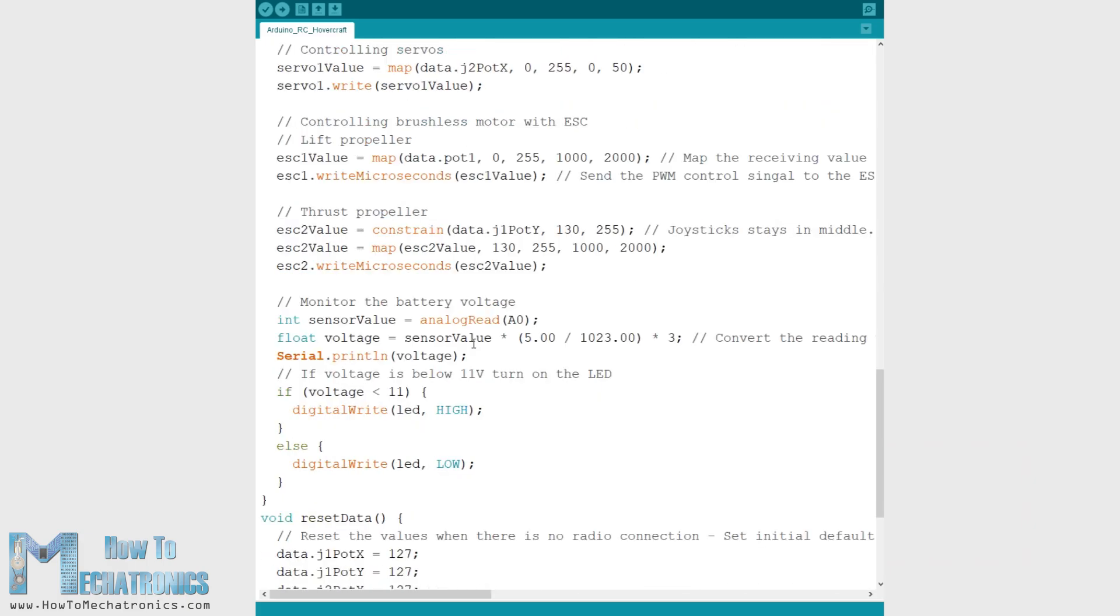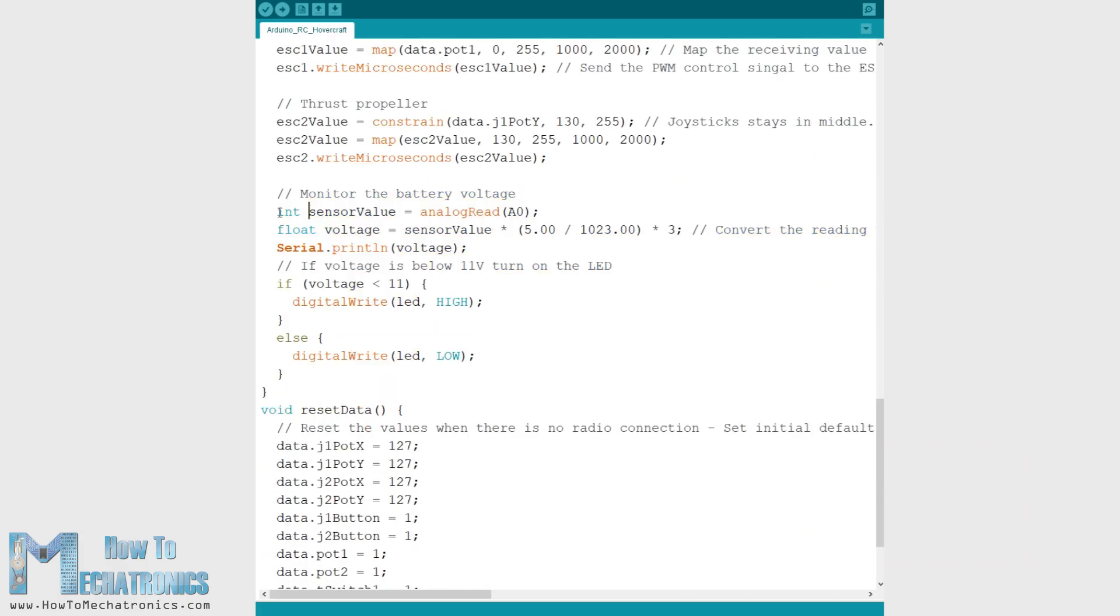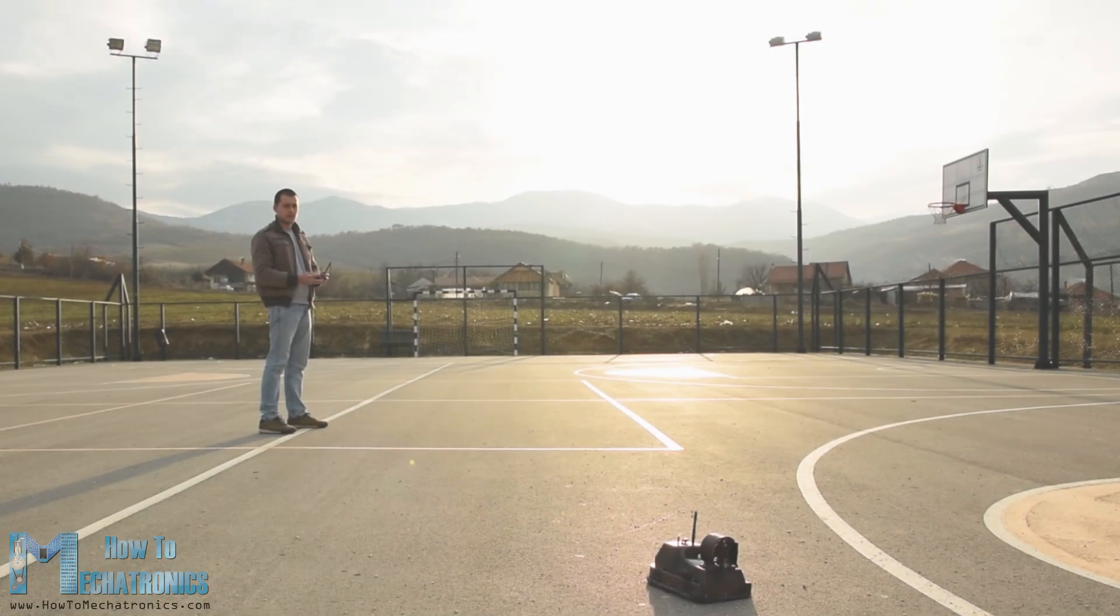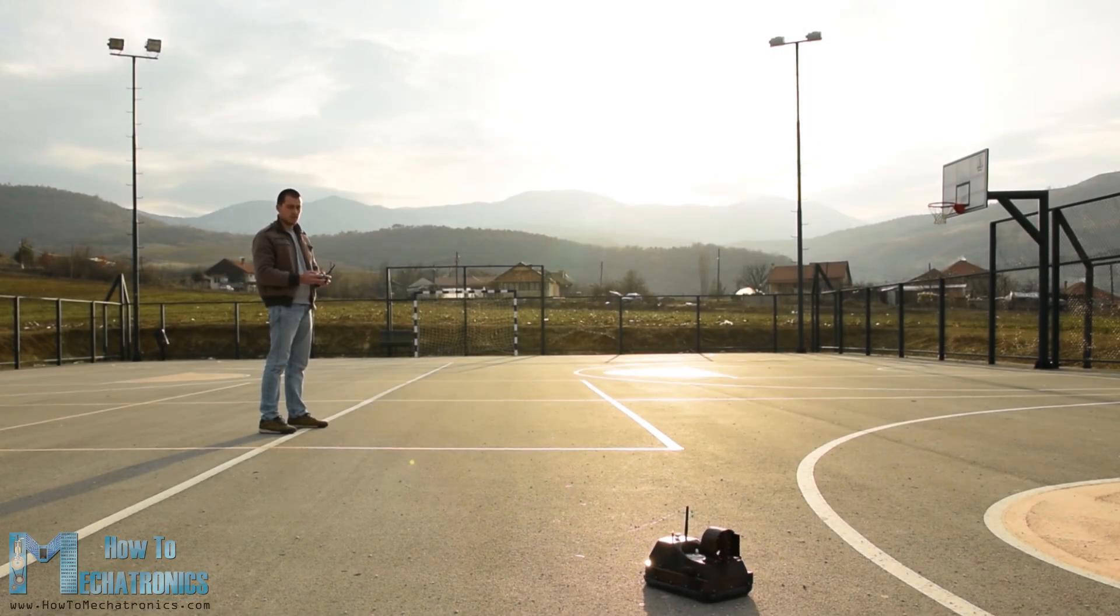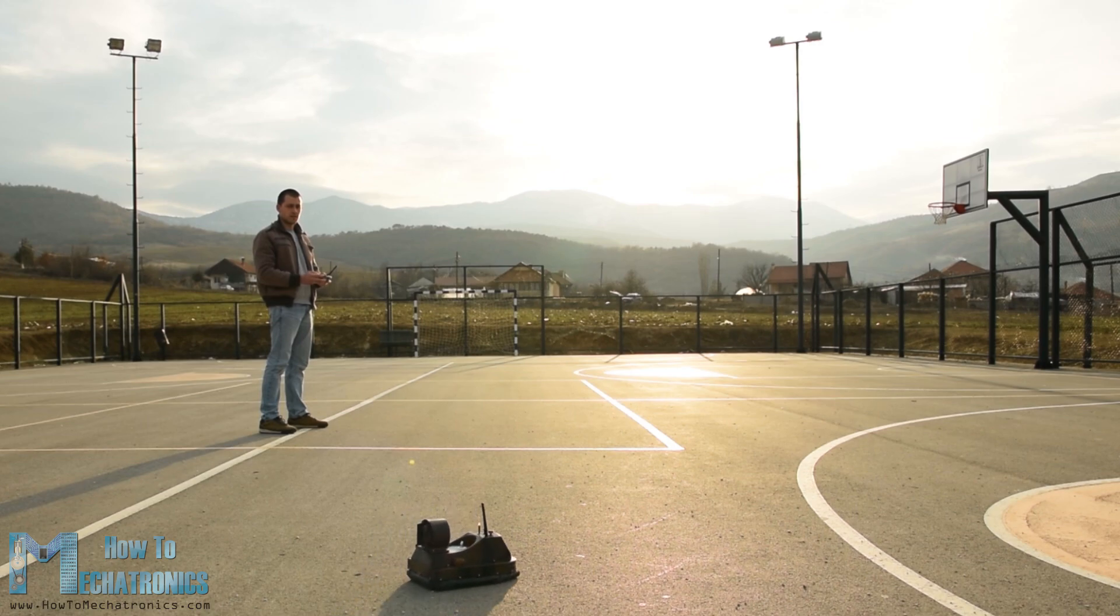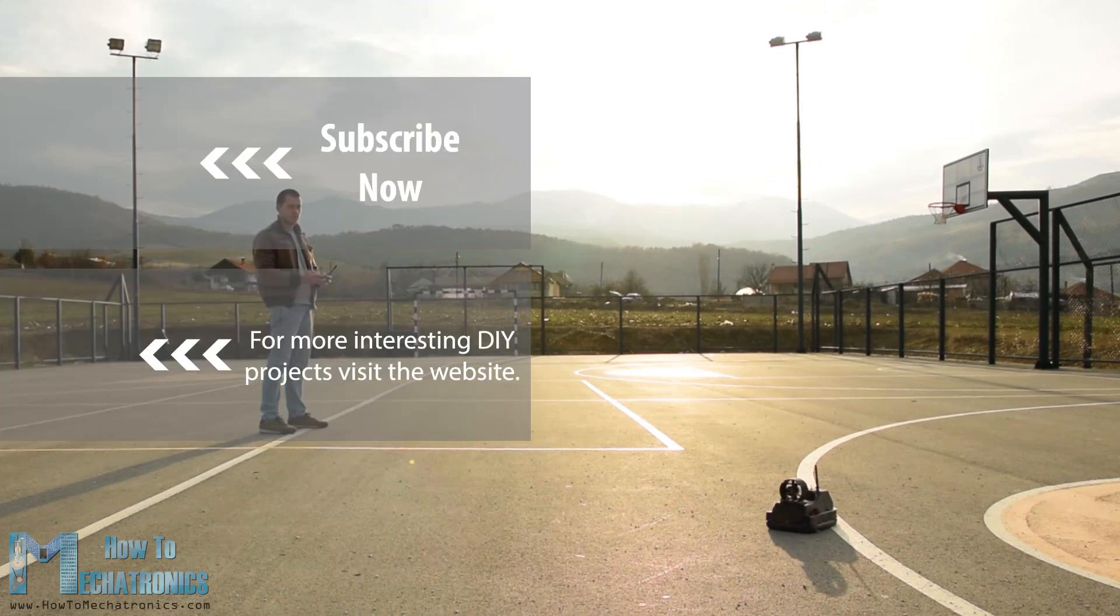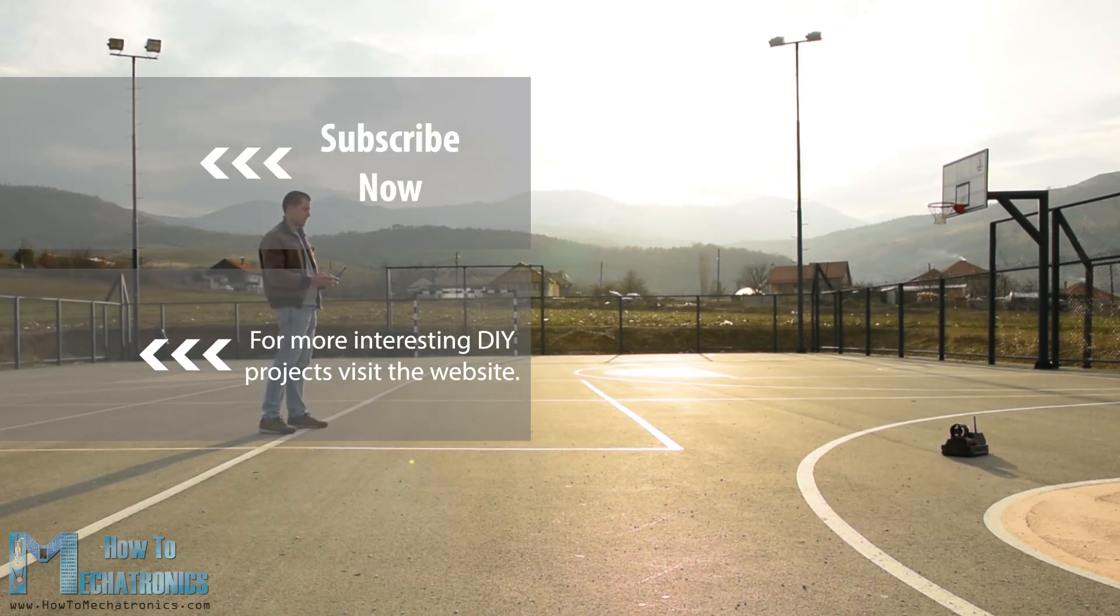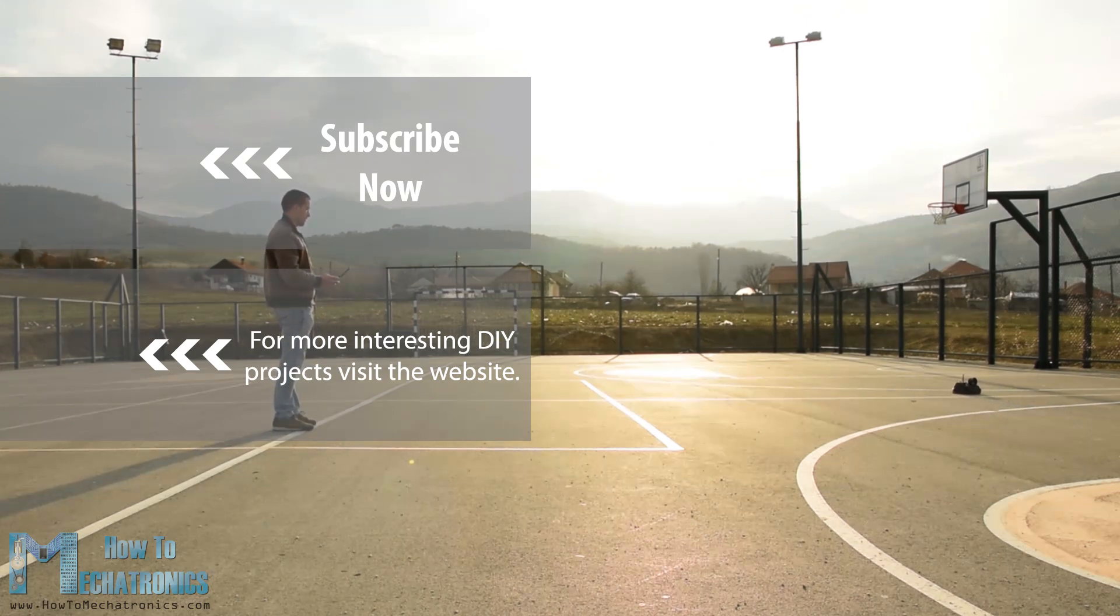For monitoring the battery voltage we read the analog input coming from the voltage divider and with some simple math we convert the input values into the real value of the battery voltage. If the battery voltage drops below 11V, we simply light up the indicator LED. And that's it, in case you need more details you can check out the other suggested tutorials, and so you will be able to fully understand how everything works. I hope you enjoyed this video and learned something new, don't forget to subscribe and for more tutorials and projects visit howtomechatronics.com.